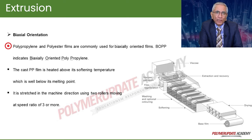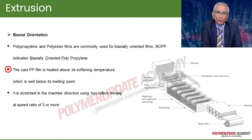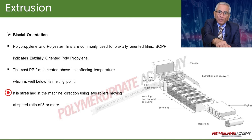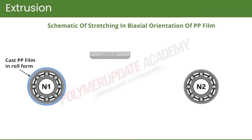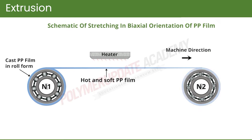The cast PP film is heated above its softening temperature, which is well below its melting point. It is stretched in the machine direction using two rollers moving at a speed ratio of three or more. Polypropylene and polyester PET films can be further processed by bi-axial orientation. In this process, the film is first cast, then unwound from the roller, subjected to heating above its softening point — not melting — and then this hot film is stretched in the machine direction.